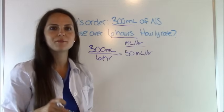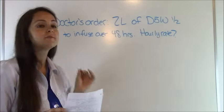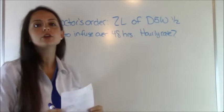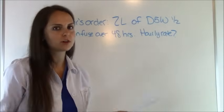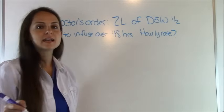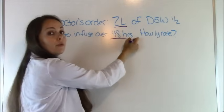Okay. Now let's do our second problem. This problem says doctor orders 2 liters of D5W half normal saline to infuse over 48 hours. What's our hourly rate? So we'll get this solution in. So again, I like to set up my problem with what the doctor ordered and they ordered 2 liters over 48 hours.